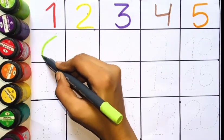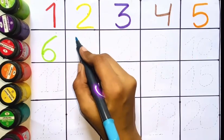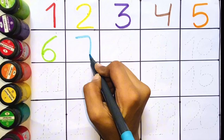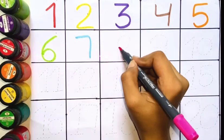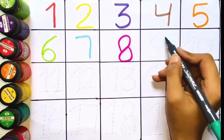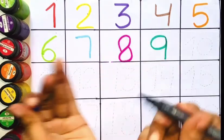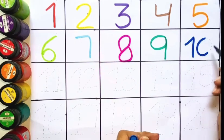Six. Light green color. Seven. Light blue color. Eight. Pink color. Nine. Dark green color. Ten. Dark blue color.